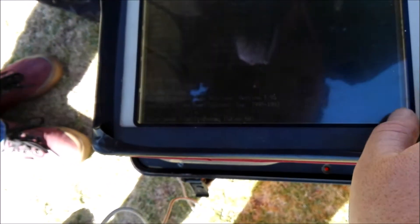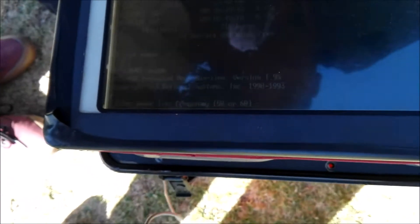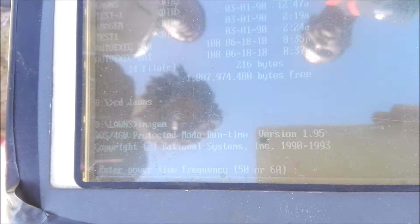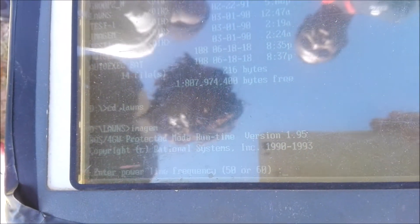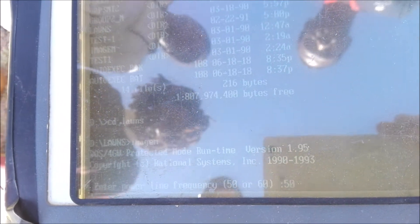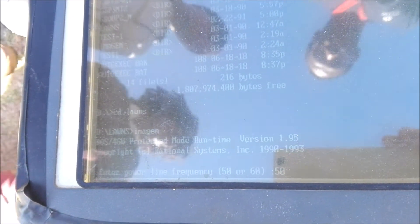Okay, so it has to ask us a few questions before it sets up Imogen. So it asks, enter power line frequency. Yeah, it's 50, but it could be 50, 60 or 80. So it's 50 for us, so you just put 50 in there, okay? Okay, so once you're happy, we press enter.